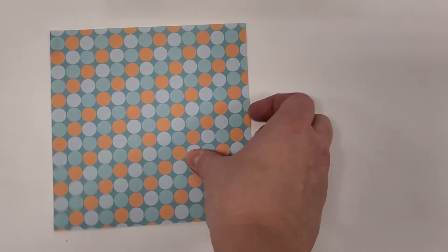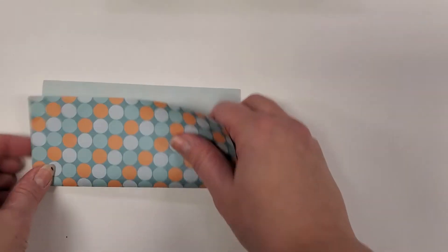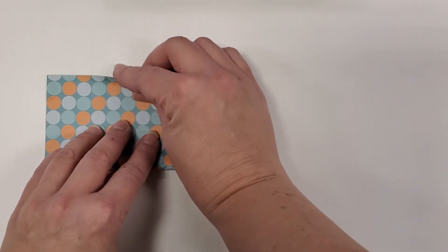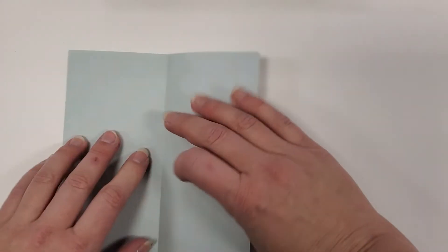To make a simple origami box, we want to first start by folding our paper in half both ways so it makes a rectangle. It's also called a book fold.